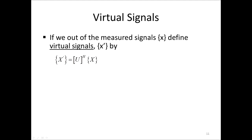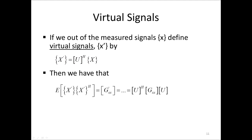We now turn to virtual signals, which can be very efficiently used for noise source identification and transfer path analysis. Assuming we have the DFT blocks of our signals in a vector X, we define virtual signals X' as U Hermitian transpose times X, where U is the eigenvector matrix. Taking the expected value of X' times X' Hermitian conjugate gives the input cross-spectral density matrix of the X' signals, equal to U Hermitian transpose times GXX times U.